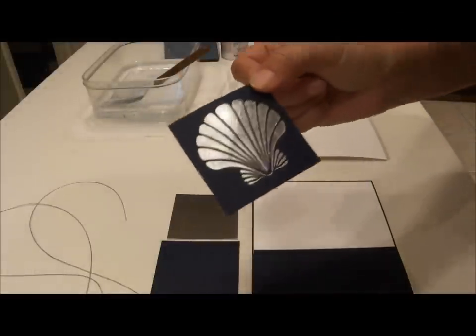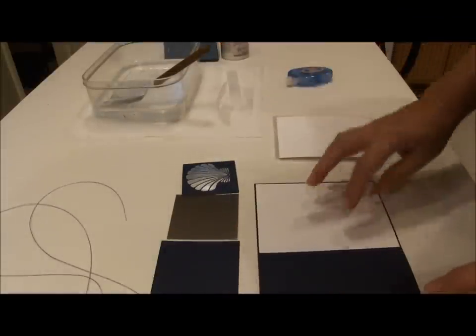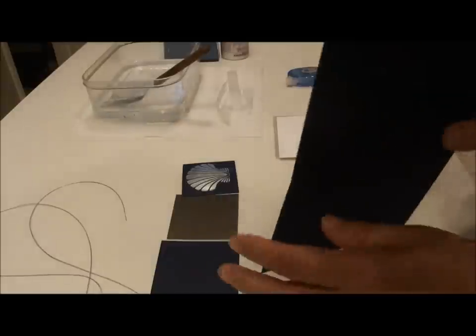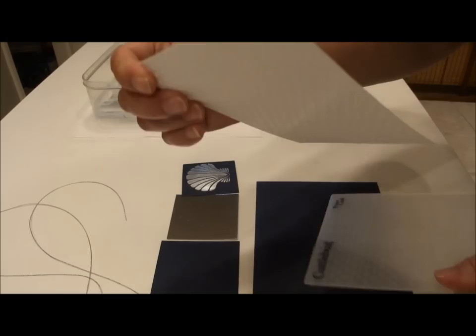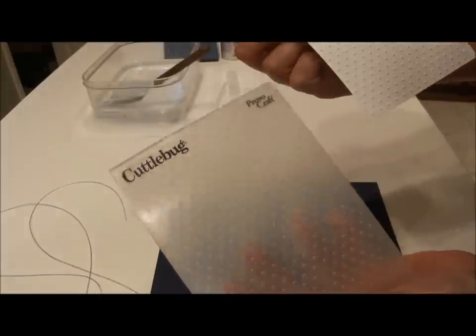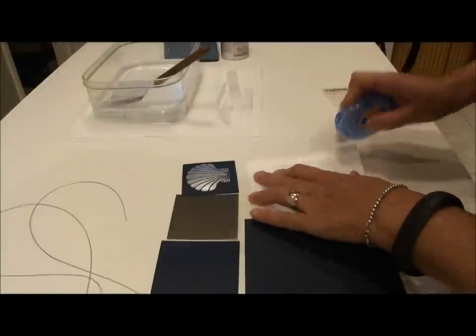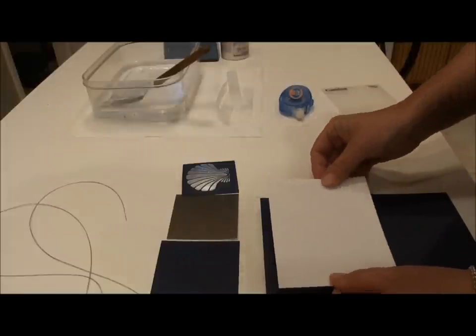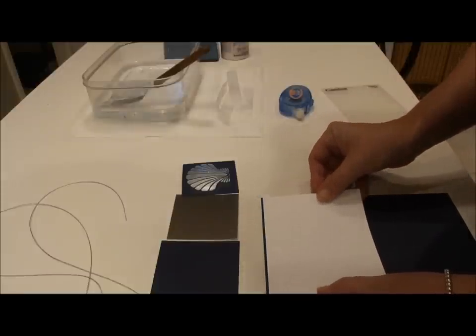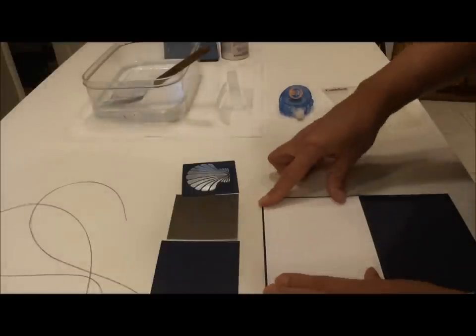So now that my pearl shell is dry, I'm going to assemble the rest of the pieces of my card. So I decided that I wanted to do a lot of layers on the front. I cut another piece of white cardstock to four and one eighth by five and three eighths and then I ran it through the small dots cuddle bug embossing folder so that I could have texture. And I'm going to attach that piece first and make sure I have equal amount of card on left, right, top, and bottom.